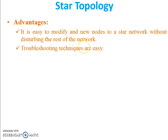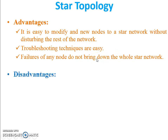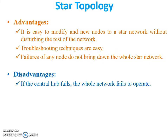Advantage two: troubleshooting techniques are easy. If any PC is not connected to the centralized hub, you can directly identify whether the problem is on the hub side or the particular PC side. Advantage three: failure of any node does not bring down the whole star network — if any connected PC goes down or fails, the star topology as a whole will not go down.